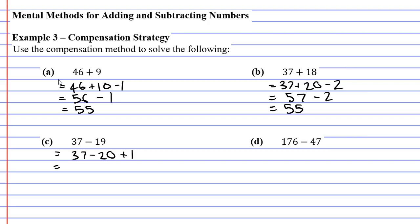Anyway, 37 minus 20 is 17, and then I'm going to plus the 1 which gives me 18.